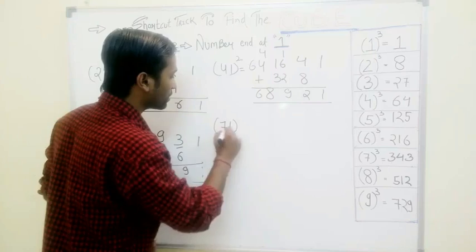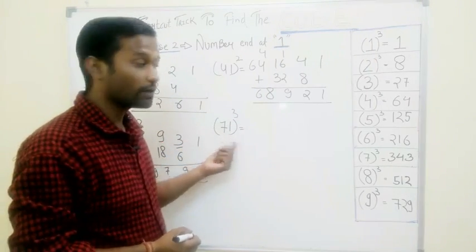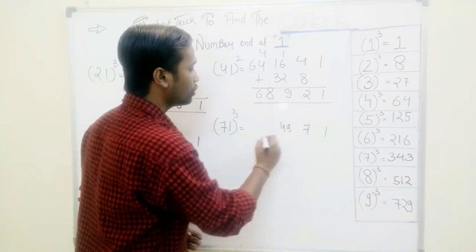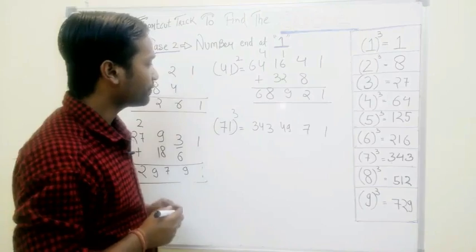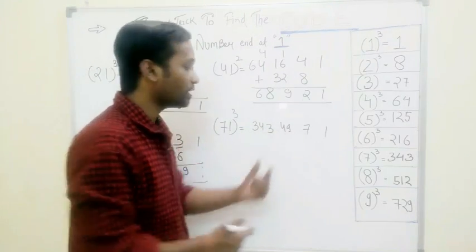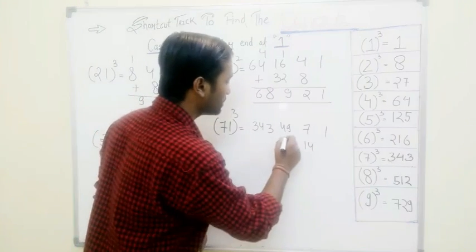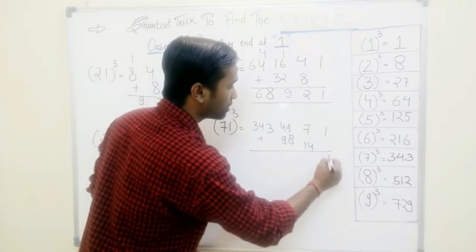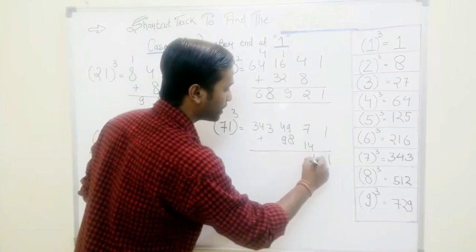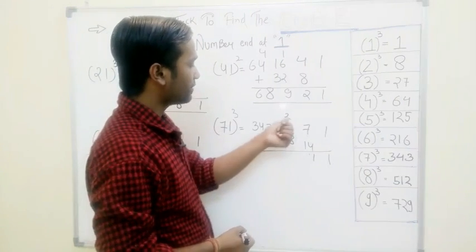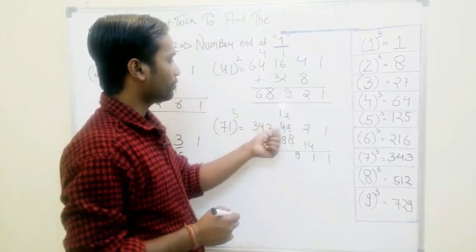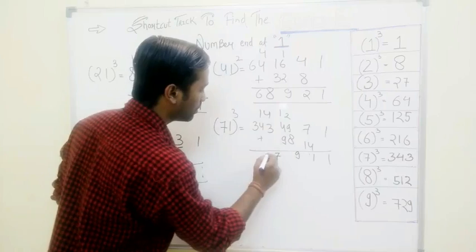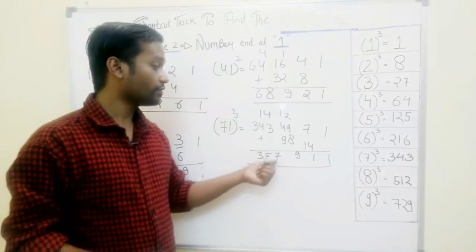Let's take a bigger example: 71 cubed. Same pattern. Write these two numbers from the right-hand side: 1, 7. Square this number — that is 49 — and cube this number — that is 343. Leave the extreme right and extreme left and double: 7 doubled is 14, 49 doubled is 98. Simply add: 7 plus 14 is 21, carry 2; 49 and 98 gives 19 with carry; 1 and 4 is 5; 5 and 9 is 14, carry 14. Adding final numbers: answer is 357911. Wait — our answer is 35791.